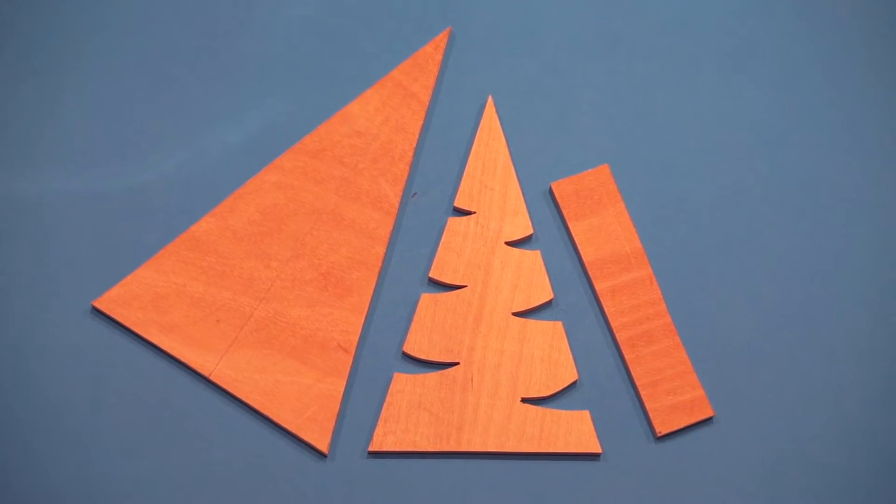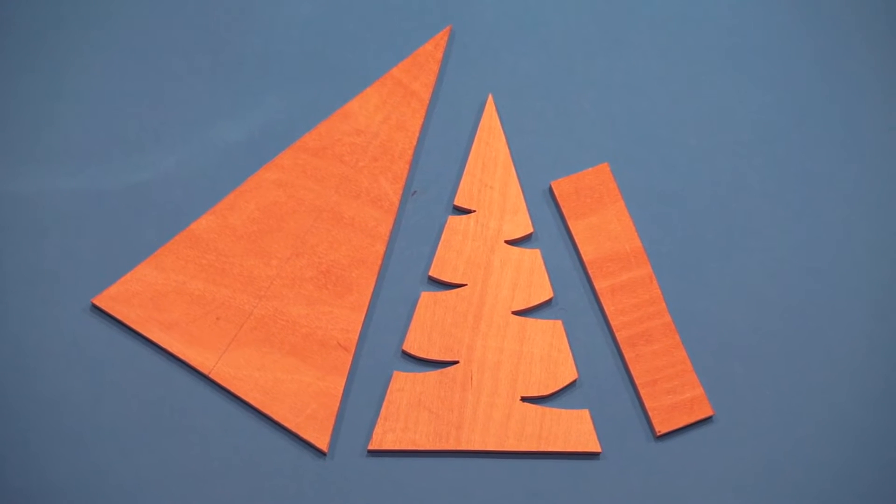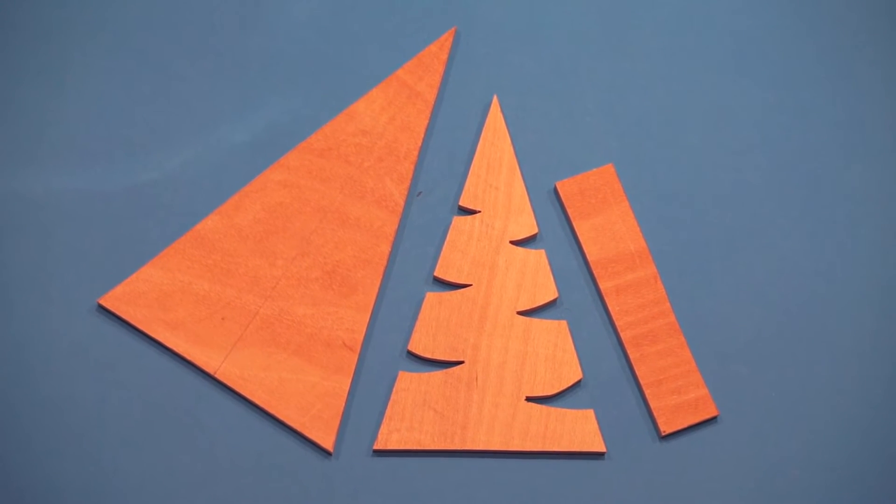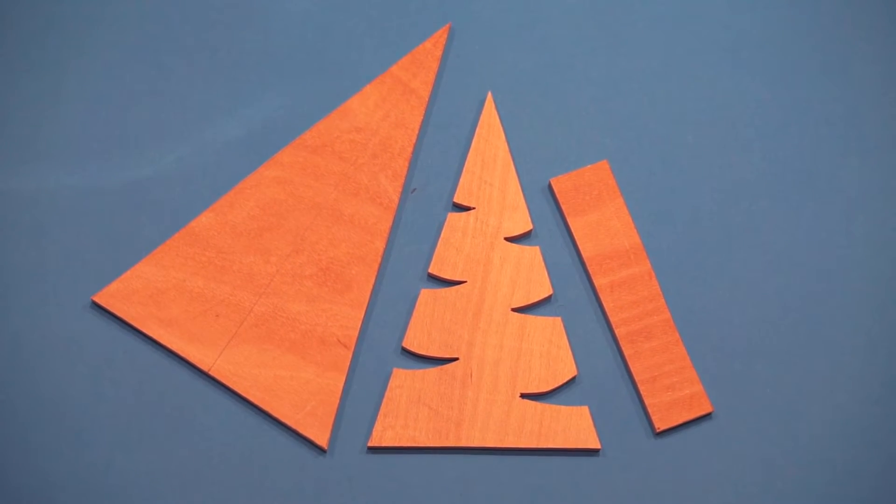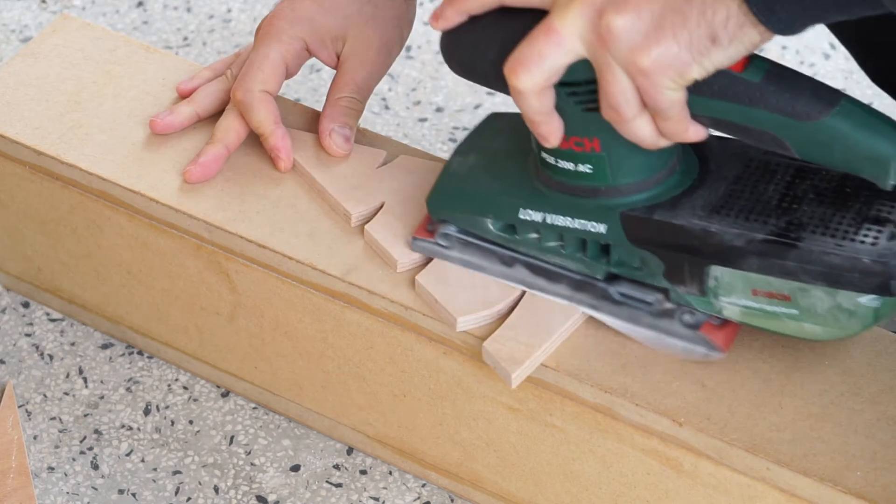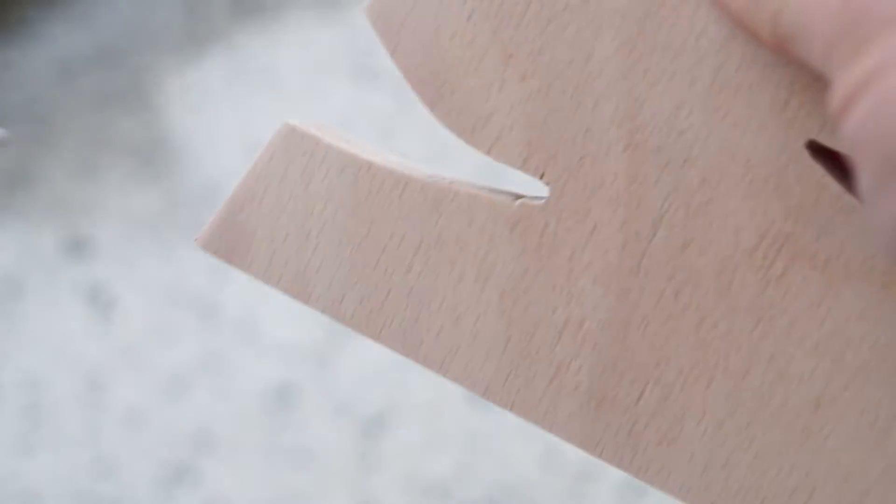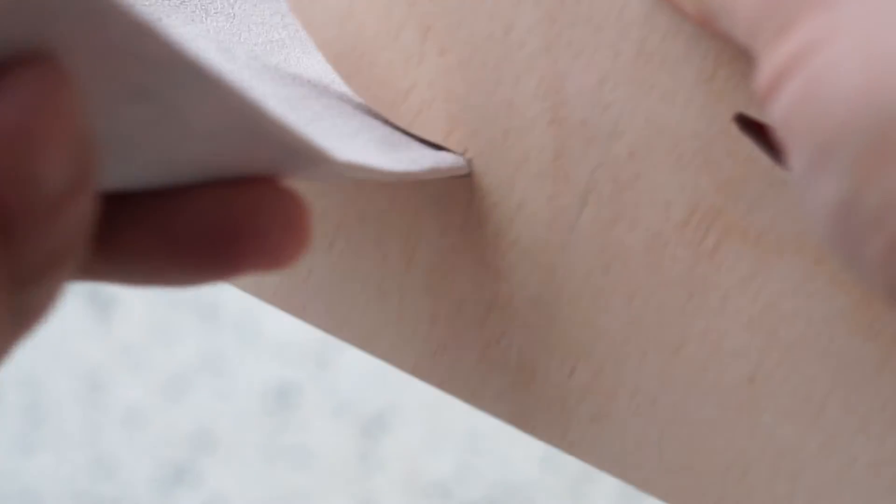Here are the cut pieces side by side. The one on the right is a base that I later chose not to use. Then I sanded down all surfaces to a nice smooth finish. I sanded in between the slits as well, using a folded piece of sandpaper.